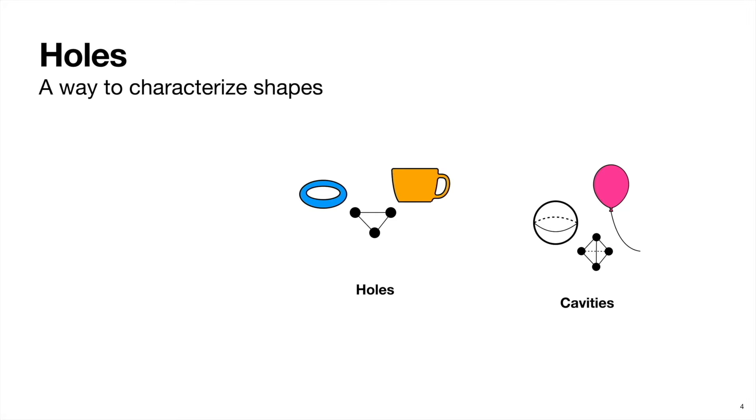We can think of cavities as holes in 3D, and we can think of singly connected components as holes in 1D. And so these generalized holes form the basis of what are called homology groups. And these give us a formal way to characterize different shapes. So when we talk about homology, we are essentially just talking about holes.